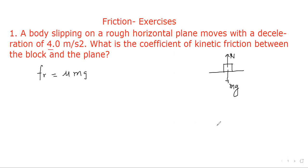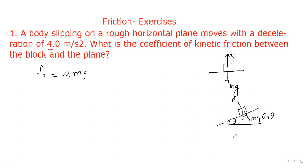In the case of an incline, if the body is kept on the slope, normal reaction is balanced by mg cosθ, and mg acts along the incline. The angle is θ, so friction will be given by μmg cosθ. We will make use of this in the next questions.